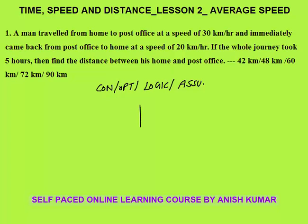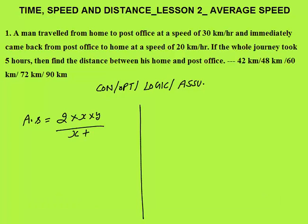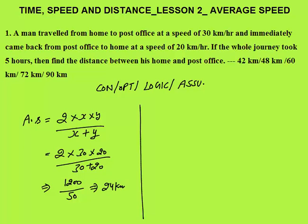First, solving conceptually: since the distance is the same in both directions, we apply the formula 2xy / (x + y) with x = 30 and y = 20. Average speed = 2 × 30 × 20 / (30 + 20) = 1200 / 50 = 24 km/h.